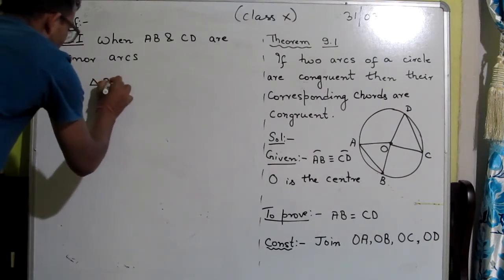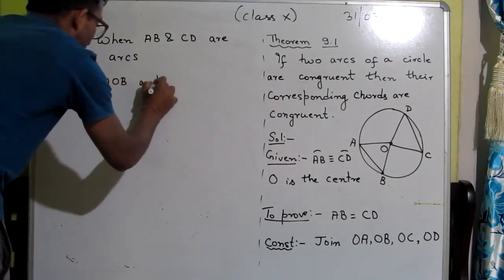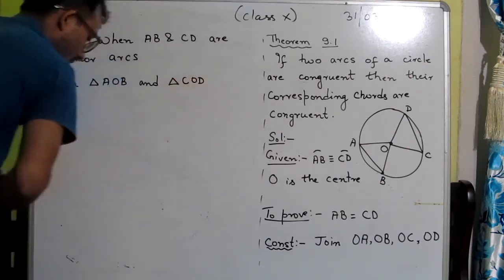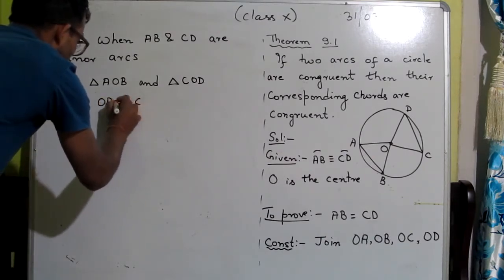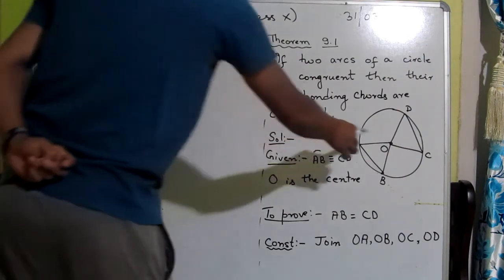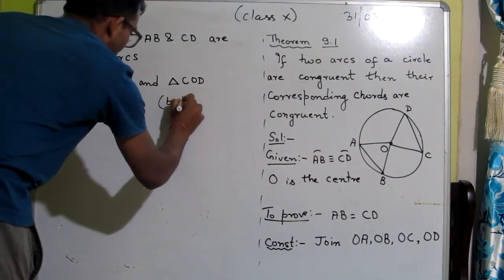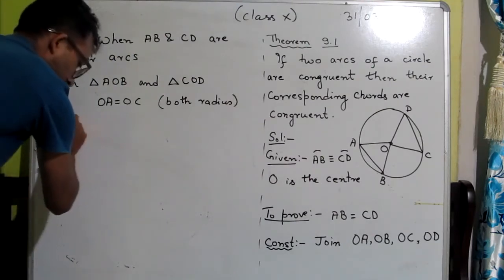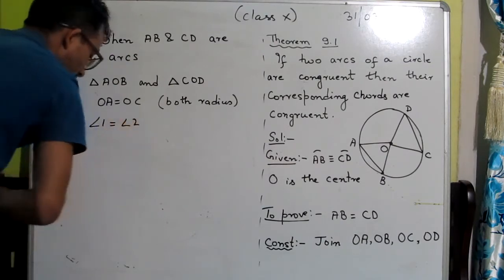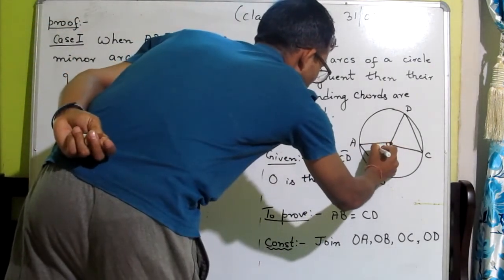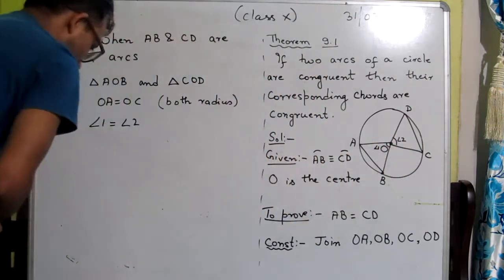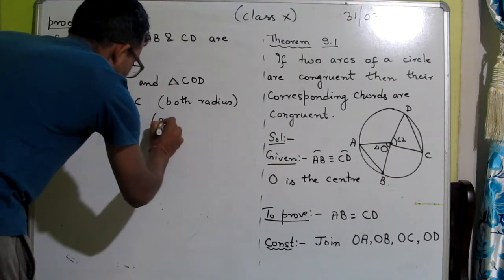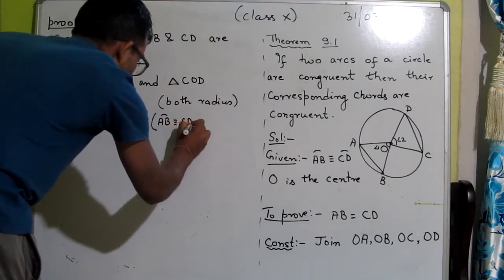In triangle AOB and triangle COD — looking at the diagram — step one: OA equals OC and OB equals OD, because both are radii of the same circle. Similarly, angle 1 equals angle 2.